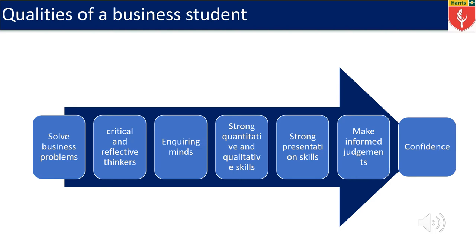Over the course of two years, you will grow as a student and show all of these skills that are not only helpful for business, but can be transferable to other subjects as well as your future. The first quality is solving business problems — every student is able to solve problems by using the knowledge that they have. Number two is being a critical and reflective thinker. This means not just agreeing with everything that you see, especially on the news, but questioning if something is right based on business knowledge.